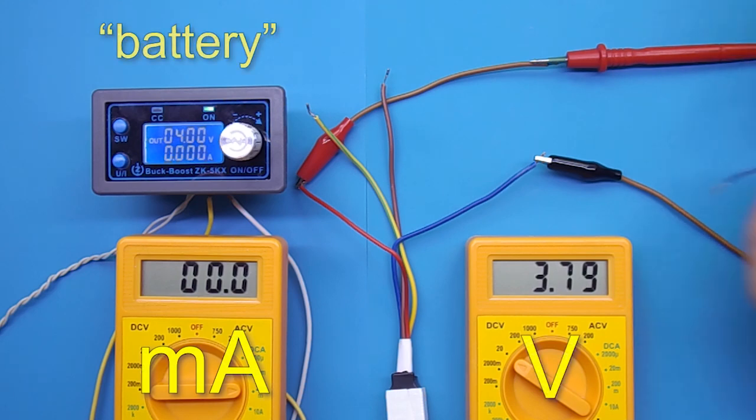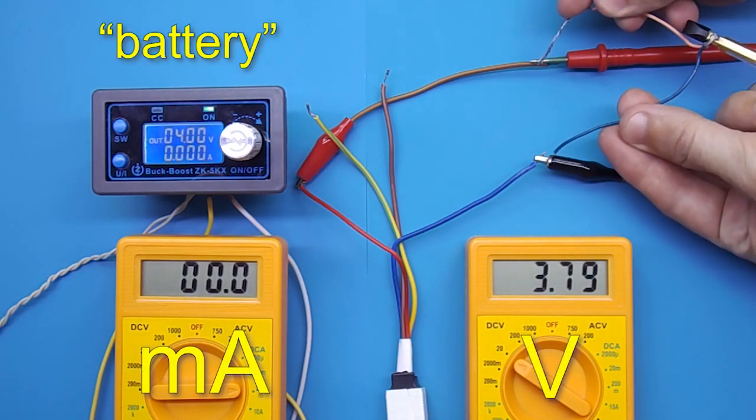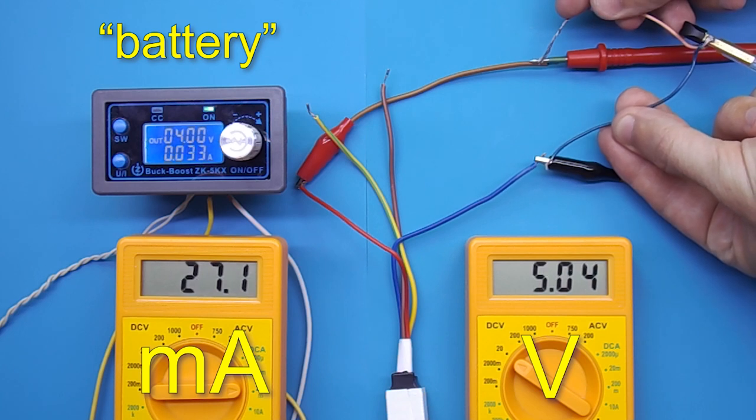When a telephone or some other load is connected to the output of the converter, the voltage at its output rises to 5 volts.